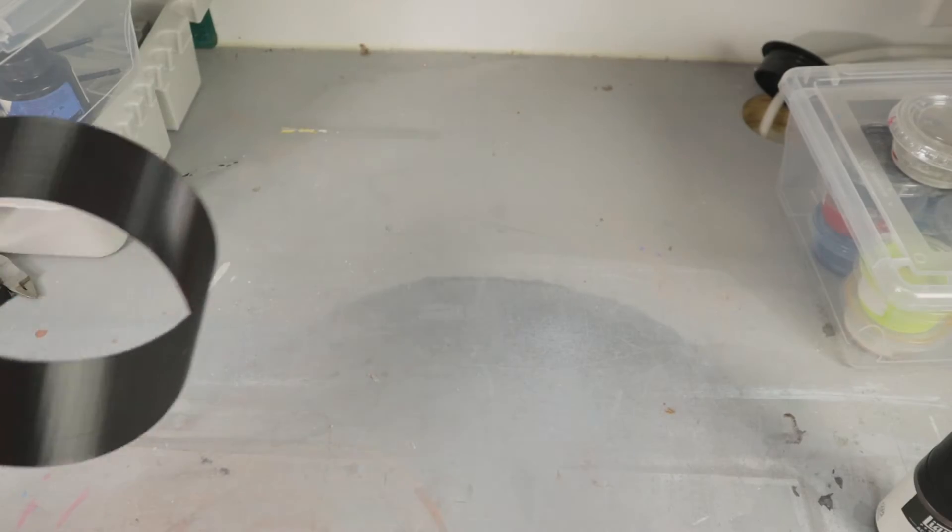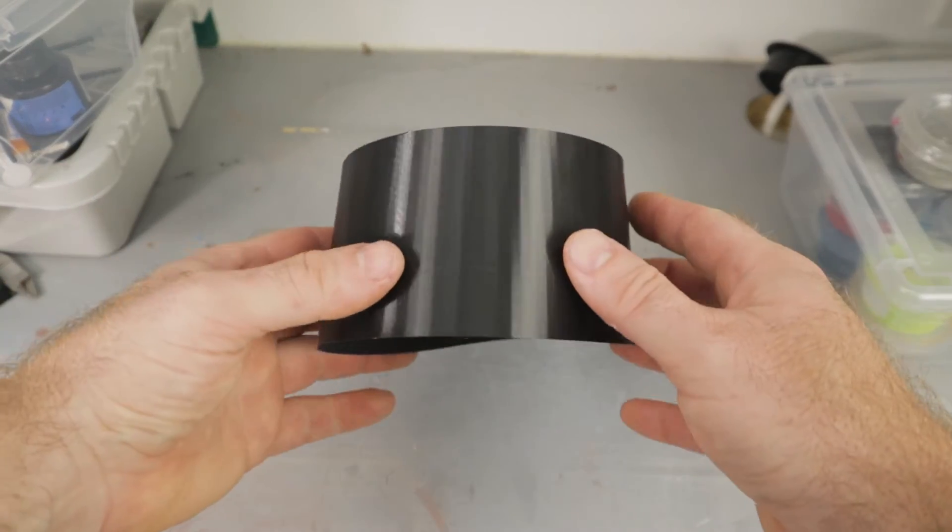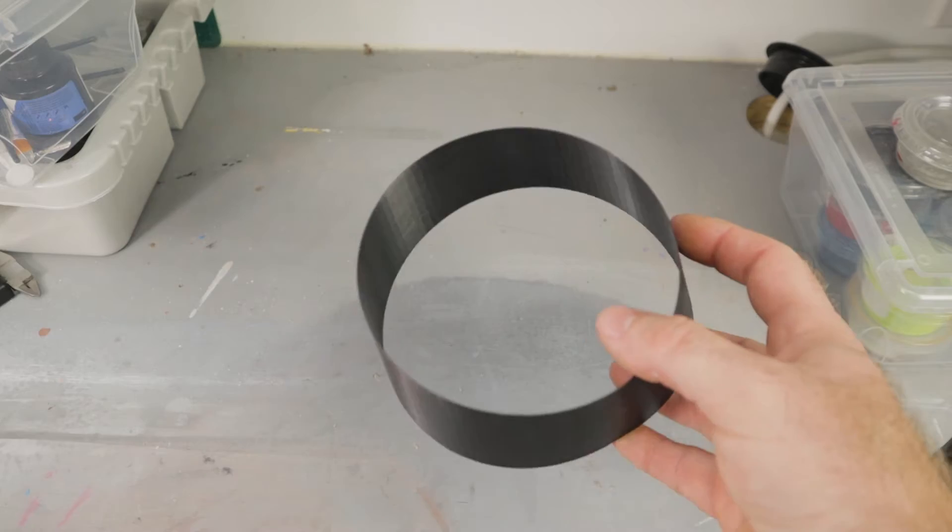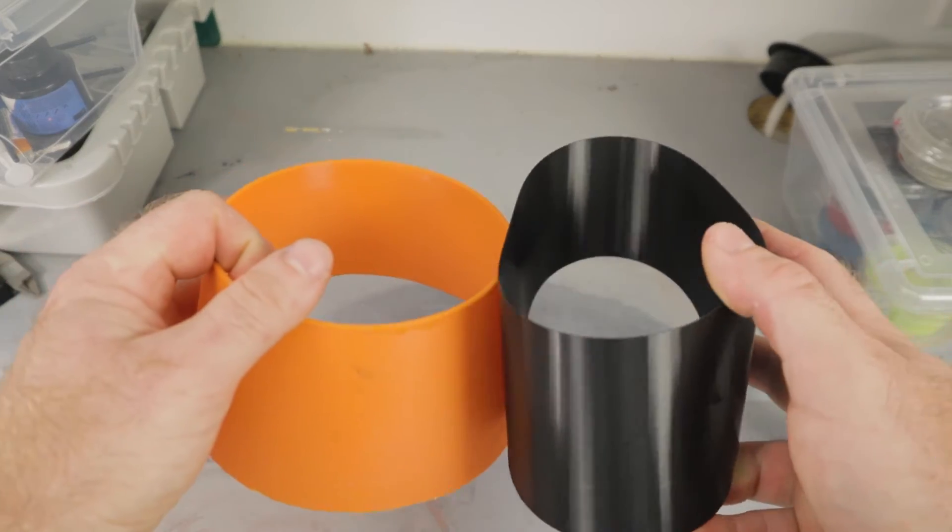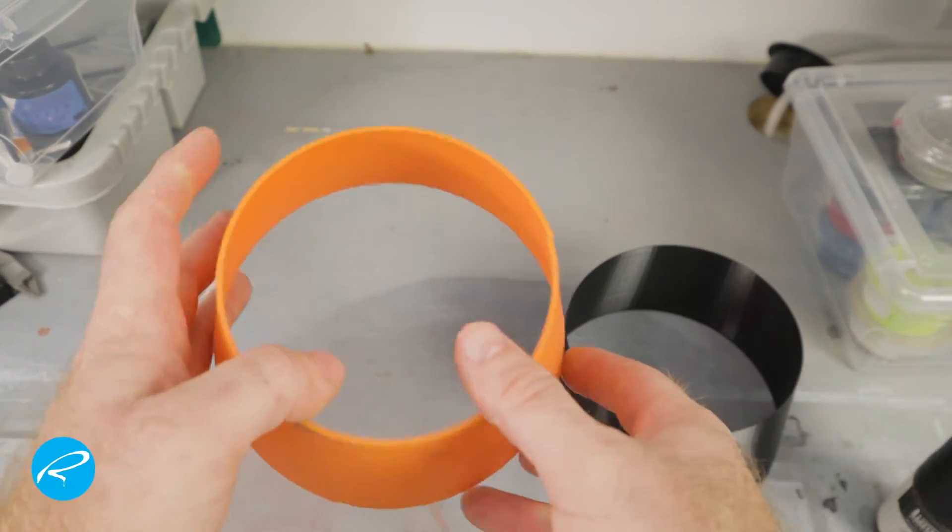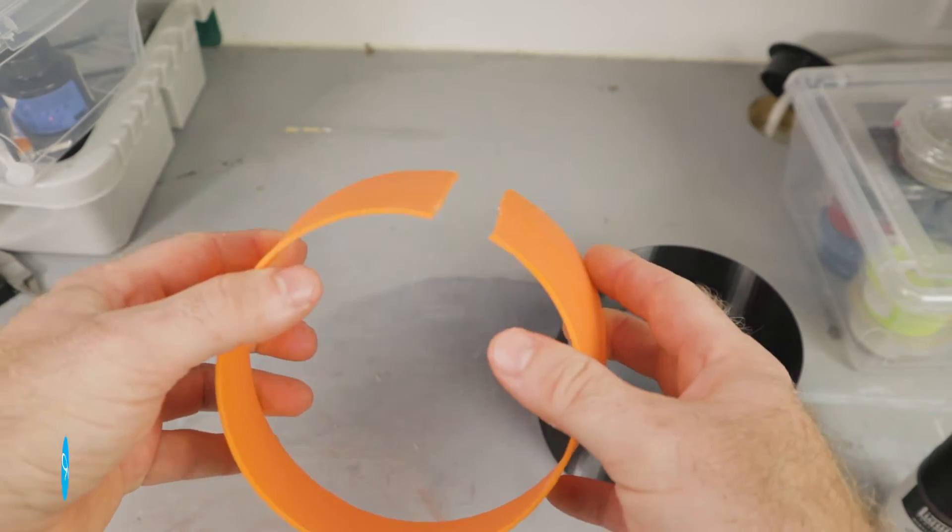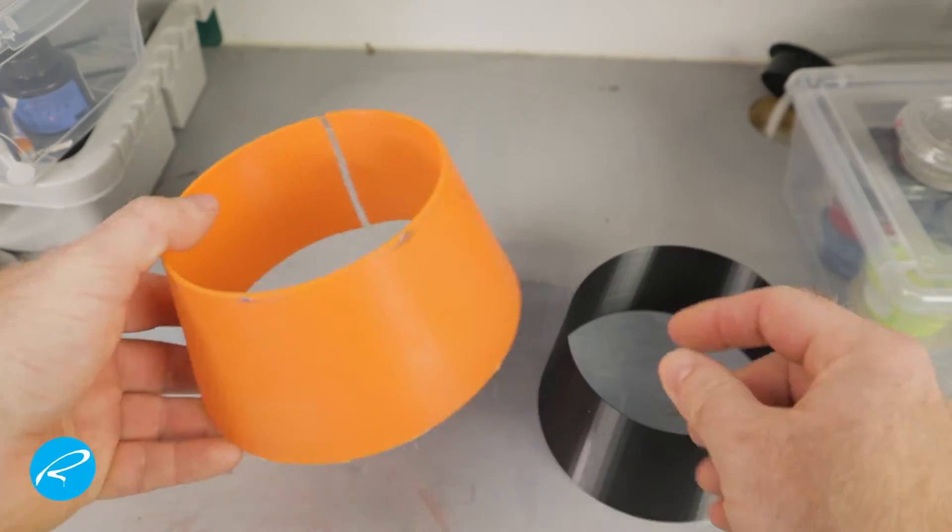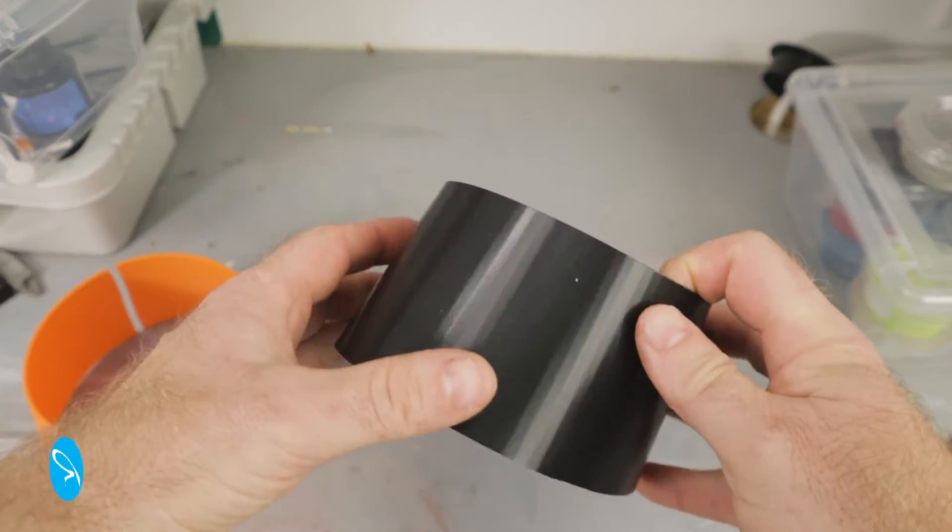Now when you print these, you don't want to print in vase mode. That's where it prints one continuous spiral all the way up, resulting in a model with only one wall thickness. This will give you a very flexible and easily breakable mold case. There may be some instances where this is what you need, but I find it doesn't work for me.